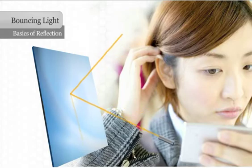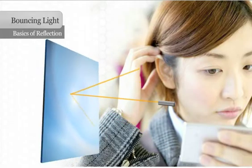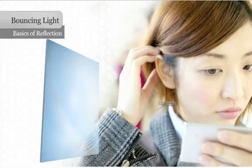You can change the image that you see on the surface of a mirror by changing your position or changing the angle of the mirror. You can change the angle of reflection by adjusting your point of view because light travels in straight lines.